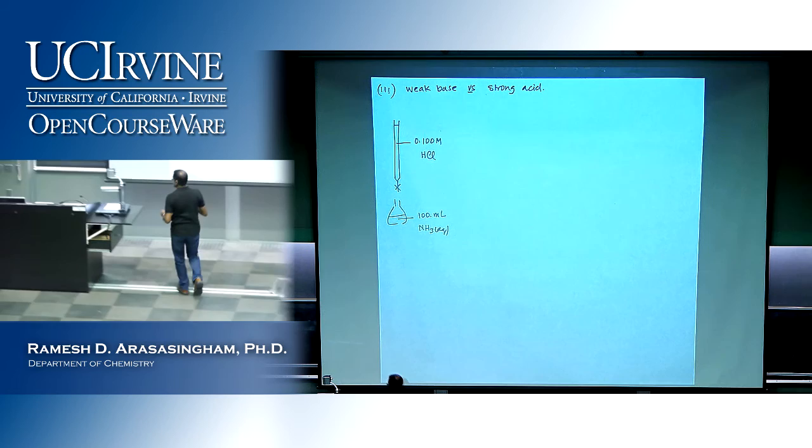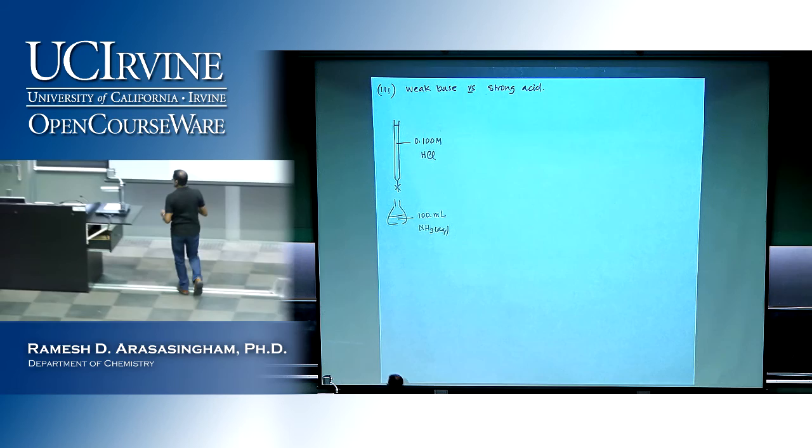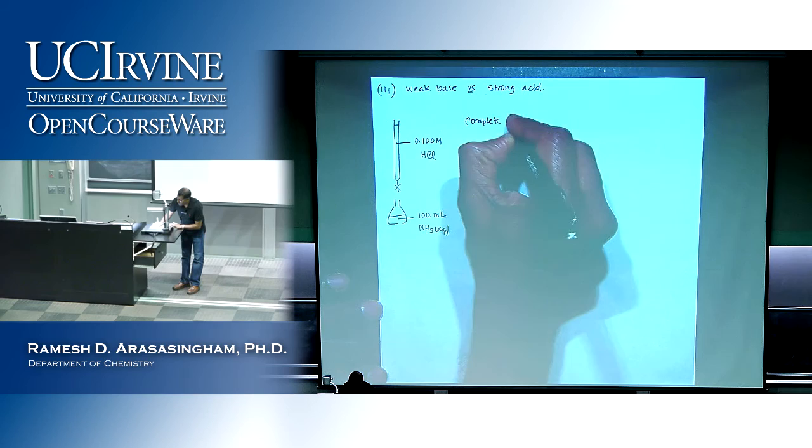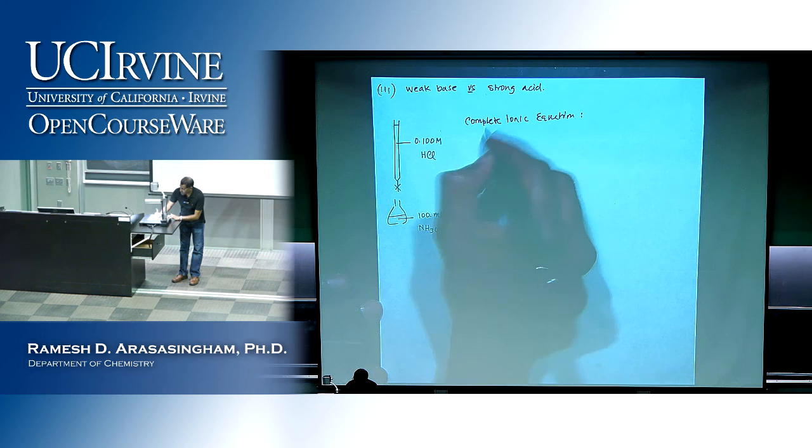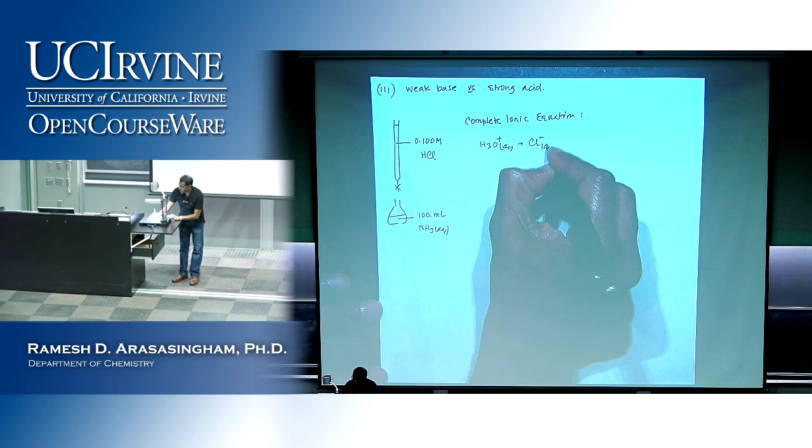So if we write the complete ionic equation and start with the strong acid: a strong acid dissociates completely, so in reality when it's dissolved in water, you have hydronium ion and chloride ion. That's the strong acid.